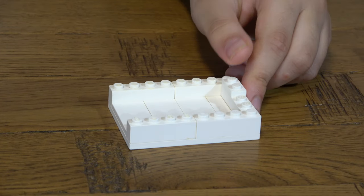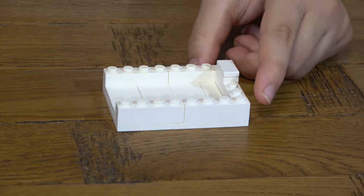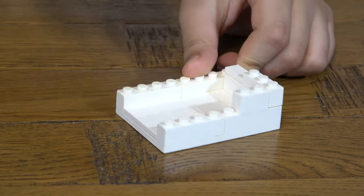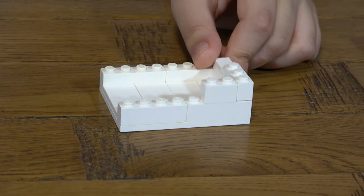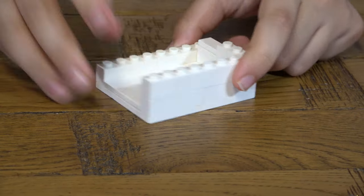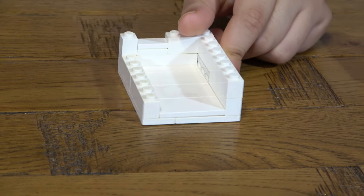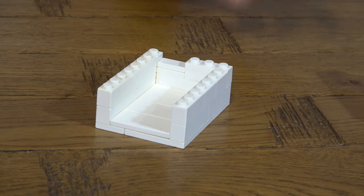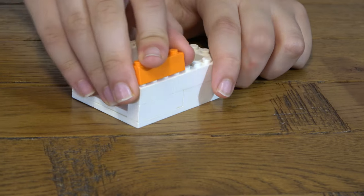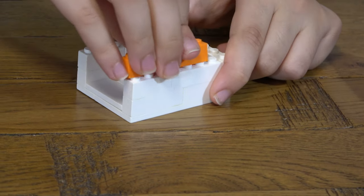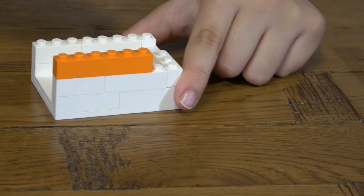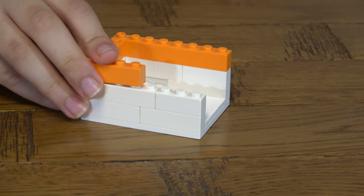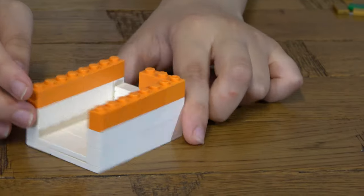Like that. And the next thing you need to do is place this here like that, then you place this here. So next you start building up with orange. There we go.